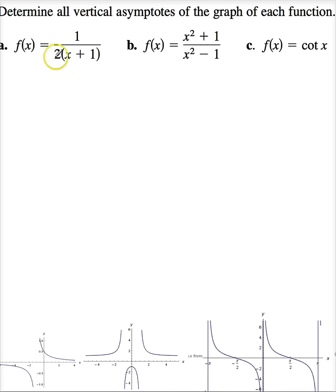f of x is 1 over 2 times x plus 1. Now, the numerator is never 0, so when does 2x plus 1 equal 0? And of course, that is when x equals negative 1. So, this is the vertical asymptote for this function.